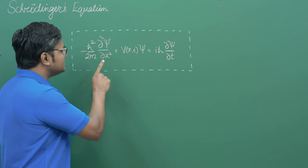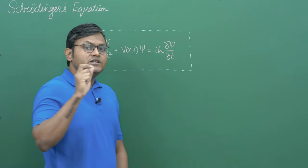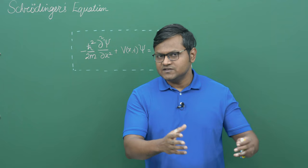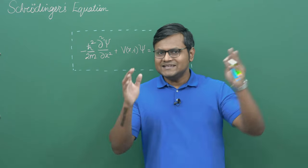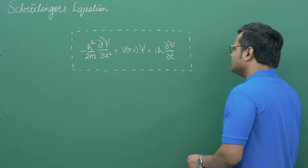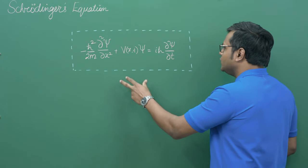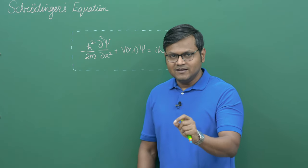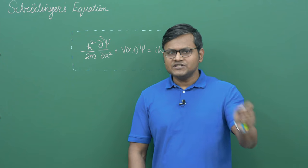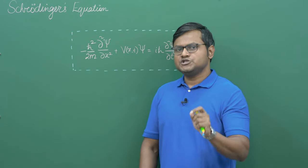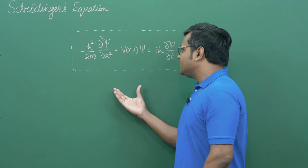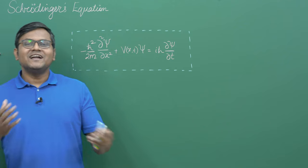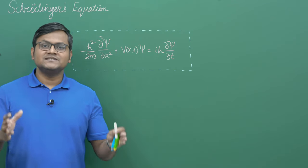The Schrödinger's equation plays the same role in quantum mechanics that Newton's laws play in classical mechanics, or Maxwell's equations play in electromagnetic theory. If we want to study a quantum mechanical system — its position, momentum, energy, trajectory — if we want any information about that quantum mechanical particle, this is where we start. The Schrödinger's equation gives us the starting point for studying any kind of quantum mechanical system.